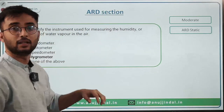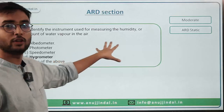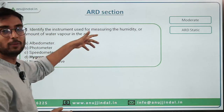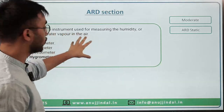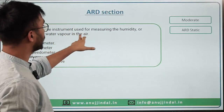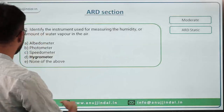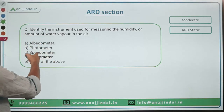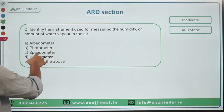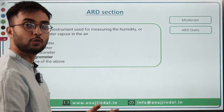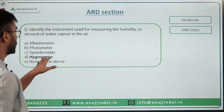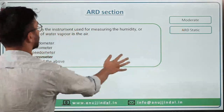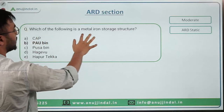'The instrument for measuring humidity.' This is related to agrometeorology. The answer is Hygrometer. Options included Albedometer, Photometer, and Speedometer — Photometer is for light, Speedometer for speed, so Hygrometer was the obvious answer. A moderate to easy question. 'Which of the following is a metal grain storage structure?' — This is PAU bin, a static question found in NABARD books.